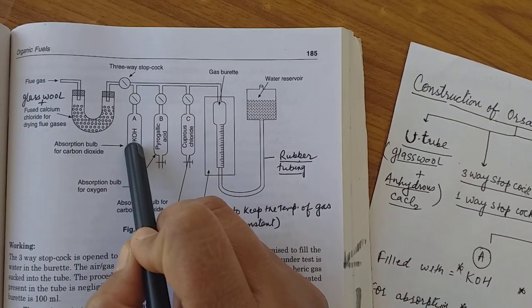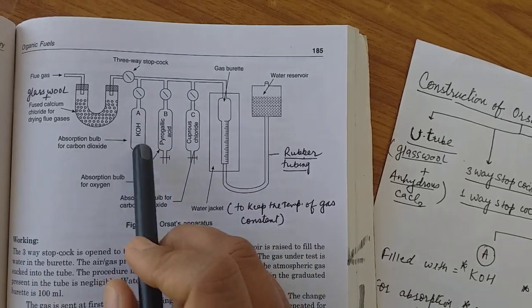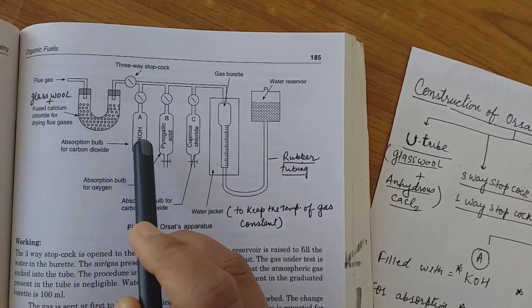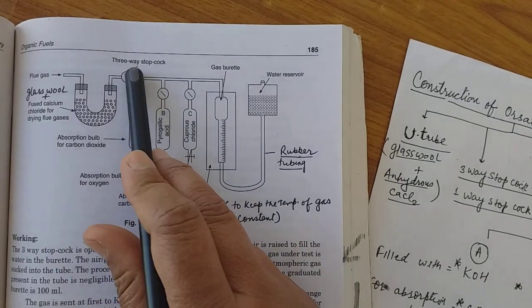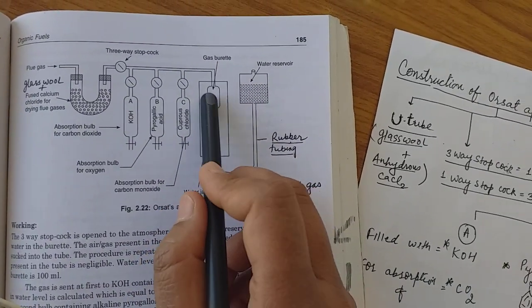Here KOH absorbs all the carbon dioxide that is present inside, and gas pressure decreases and the water level will decrease, which we will note.